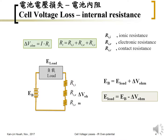If we substitute the ohmic loss term — since the internal resistance is a constant — the E_load voltage depends linearly on the current.